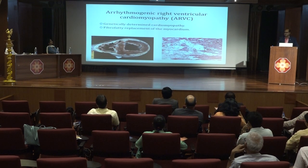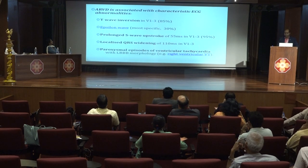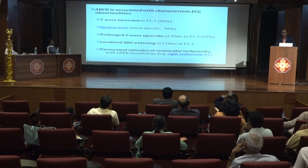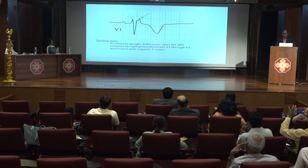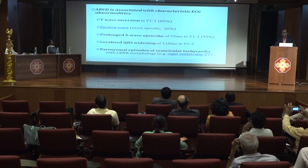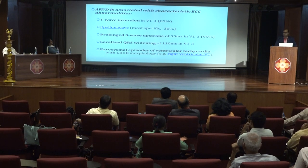Arrhythmogenic right ventricular cardiomyopathy (ARVC) is a hereditary disorder involving mainly the right ventricle and sparing the left ventricle. It is characterized by fibrofatty replacement of the myocardium. Common ECG abnormalities of ARVD include T wave inversion in leads V1 to V3 seen in nearly 85% of patients, epsilon wave seen in 35% of patients, prolonged S wave upstroke in leads V1 to V3, localized QRS widening more than 110 ms in the right precordial leads, and paroxysmal VT of left bundle branch morphology indicating right ventricular origin.